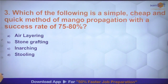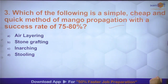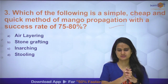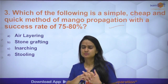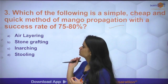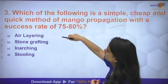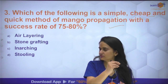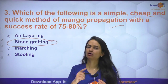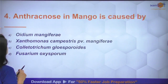Question number 3: which of the following is a simple, cheap and quick method of mango propagation? Mango को different vegetative methods से propagate किया जाता है, जिसमें important है veneer grafting। लेकिन यहाँ पूछा गया है simple, cheap और quick method — that is stone grafting, जिसे epicotyl grafting भी कहते हैं।